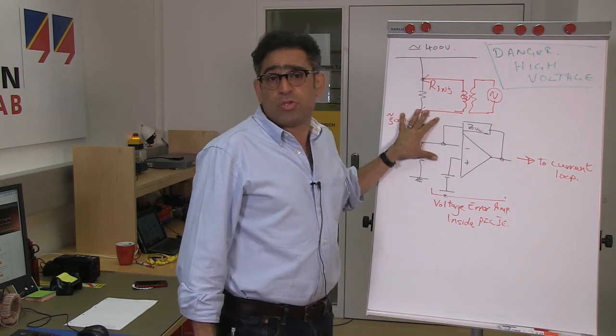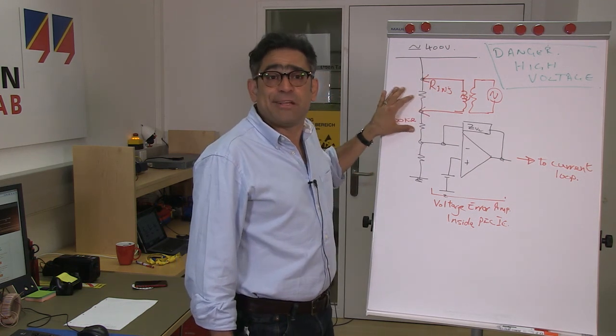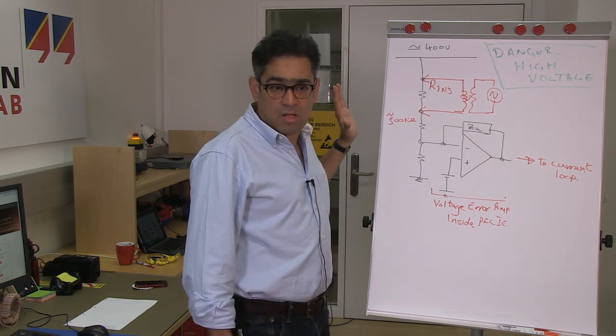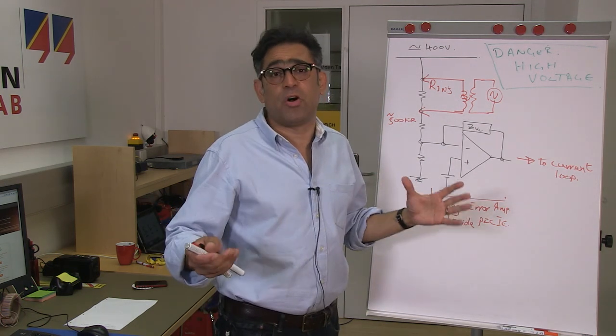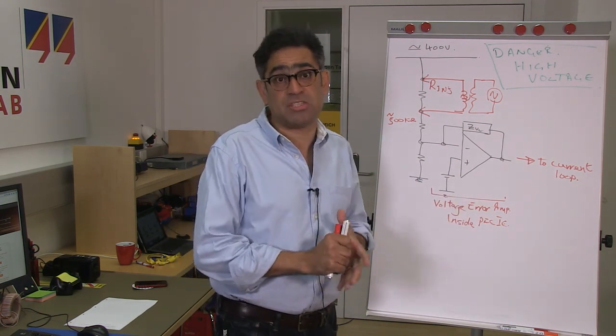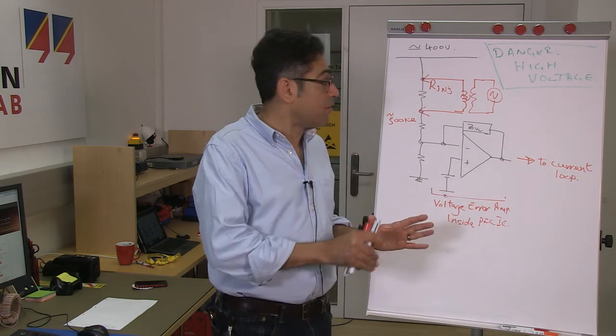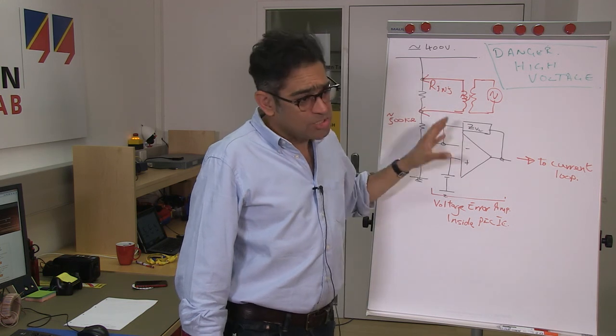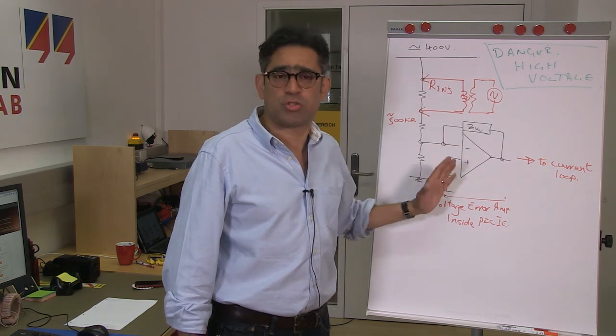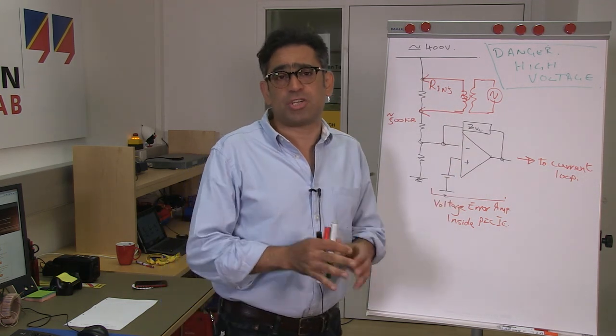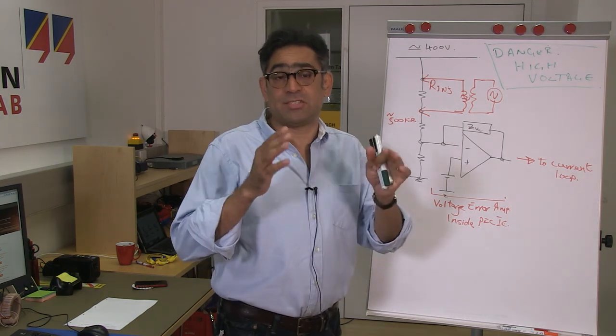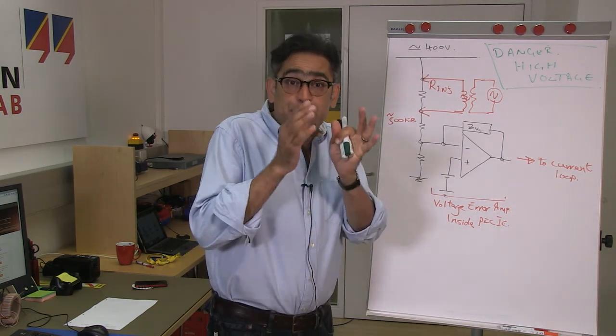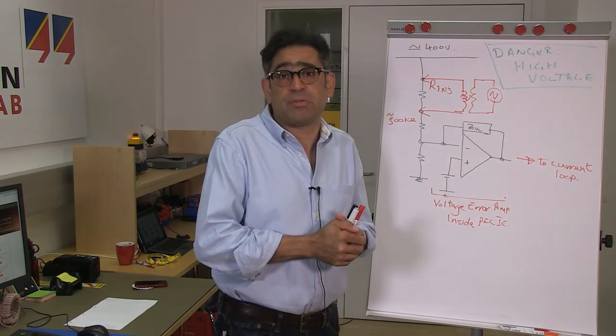For measuring the voltage loop you actually do not need to do anything to the input voltage. So you can use it just as you would do on the bench with a sinusoidal input voltage. This is not the case with current loop. And because you're looking at a very low crossover frequency, you need an injection transformer that has the ability to give you good signal integrity at very, very low frequencies.